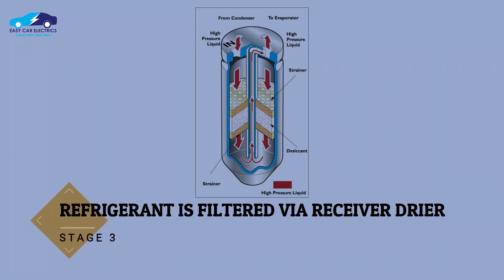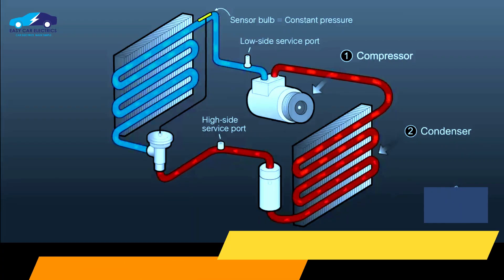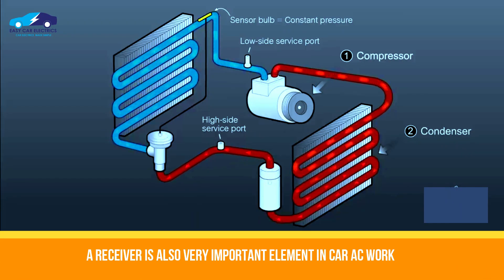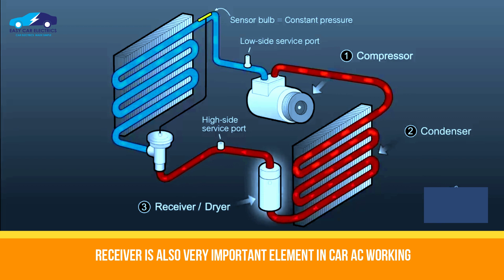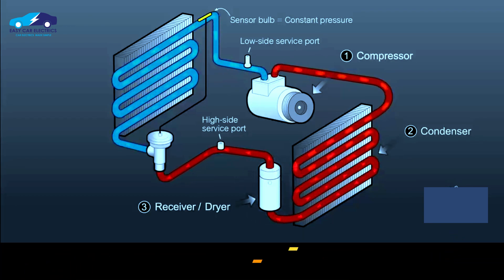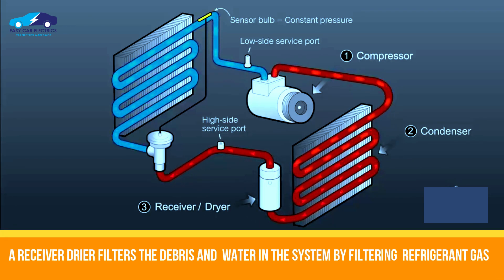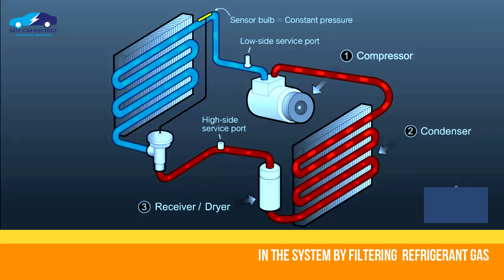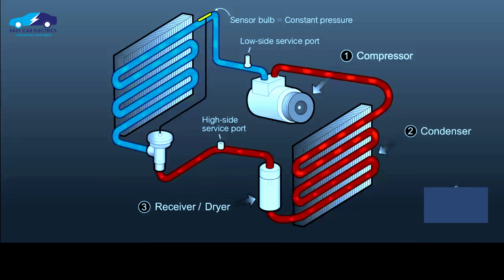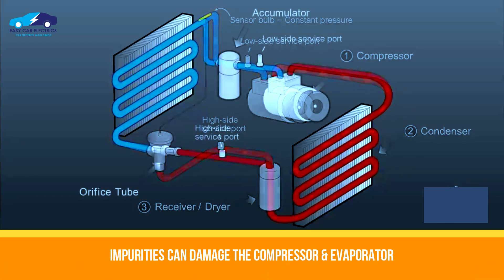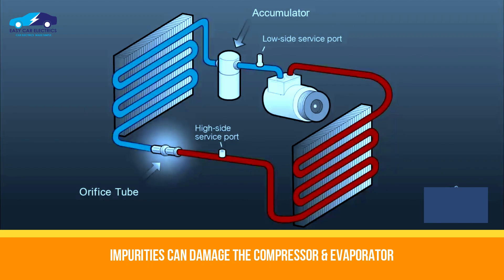Stage 3: Refrigerant is filtered via the receiver dryer. A receiver dryer accumulator is also essential in car AC working. It filters debris and absorbs water in the system by filtering refrigerant gas, because if they remain in the system, they can damage the compressor and evaporator.